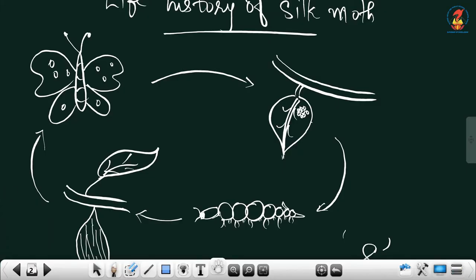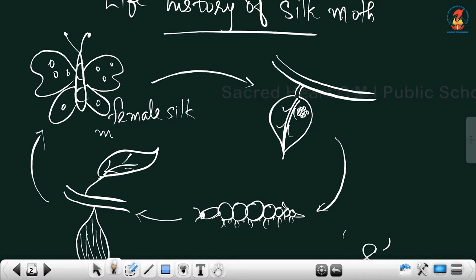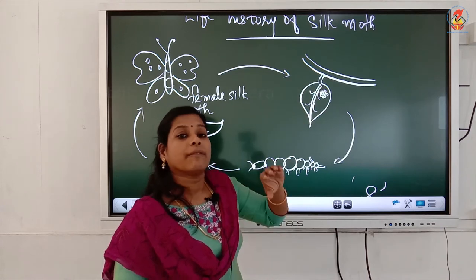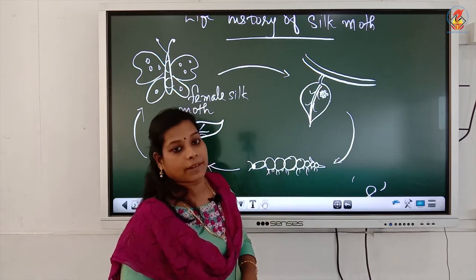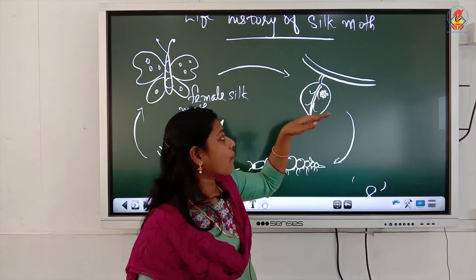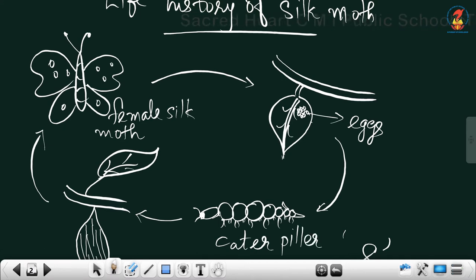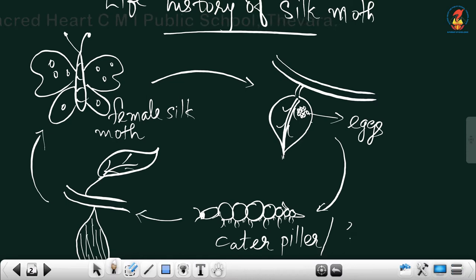So discussing the life history of silk moth: the female silk moth lays eggs on the lower side of leaves. Since they feed on mulberry leaves, we can see these silk worms in mulberry trees. On the lower side of mulberry tree leaves, we can see small eggs. Those eggs hatch into caterpillar or silk worm.